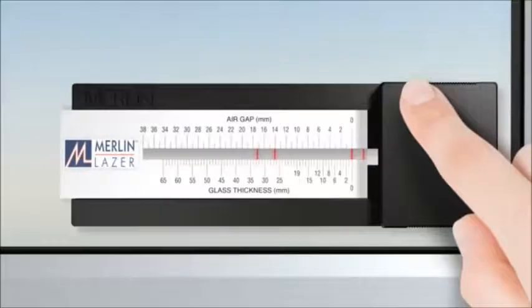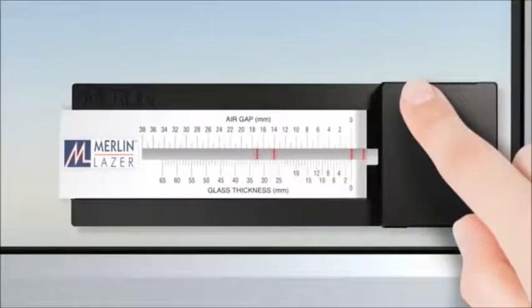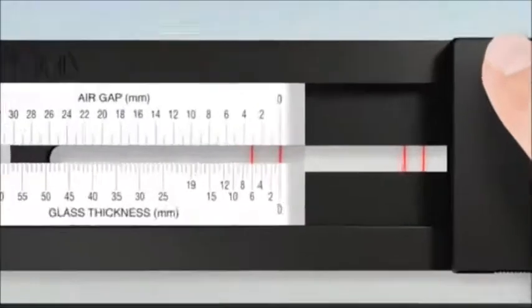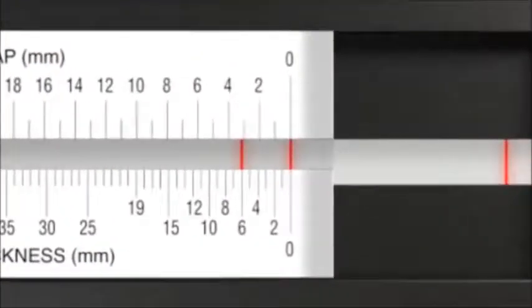Finally, to determine the thickness of the rear pane of glass, slide the scale to the left again, aligning the zero this time with the third line, and measure the distance to the fourth line on the lower glass thickness scale, which is 6mm.